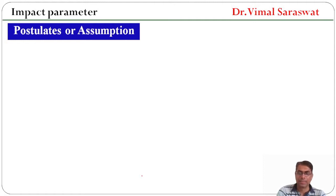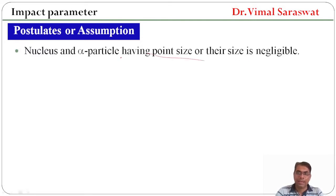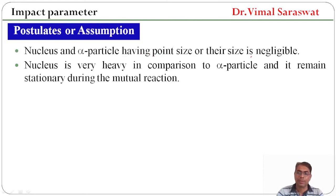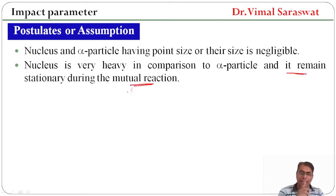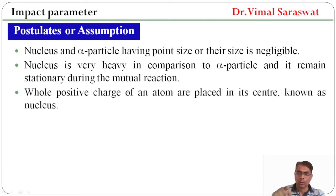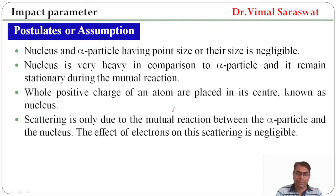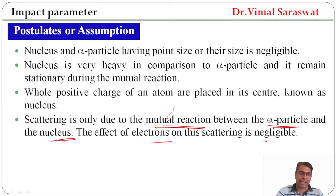First of all, the postulates or assumptions which we used in deriving the formula of impact parameter. First: nucleus and alpha particle have point size, or their size is negligible. Second: nucleus is very heavy in comparison to the alpha particle and it remains stationary during the mutual reaction between the nucleus and alpha particle. Third: the whole positive charge of an atom is placed in its center, and this center is known as the nucleus. Fourth: scattering is only due to the mutual reaction between the alpha particle and the nucleus, and the effect of electrons on this scattering is negligible.